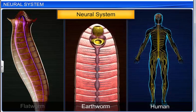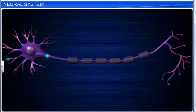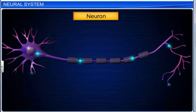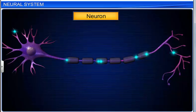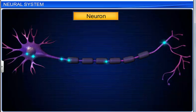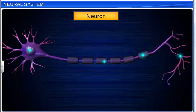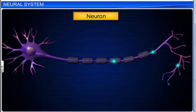All animals have a neural system that consists of highly specialized cells called neurons. These cells can perceive, receive, and transmit different kinds of stimuli. Hence, neurons are called the structural and functional units of the neural system.